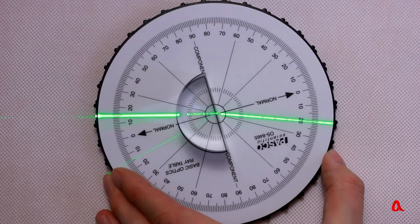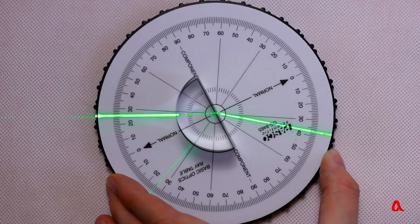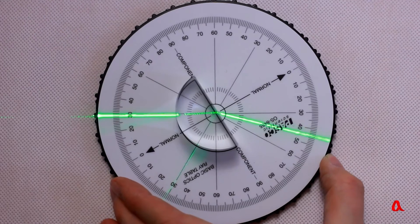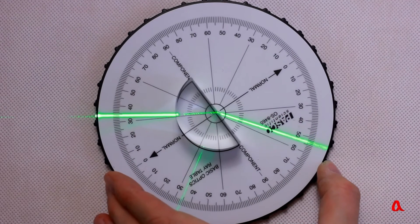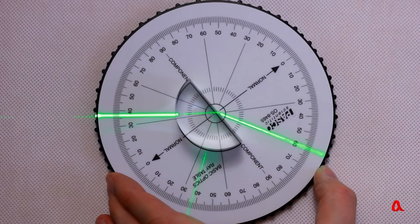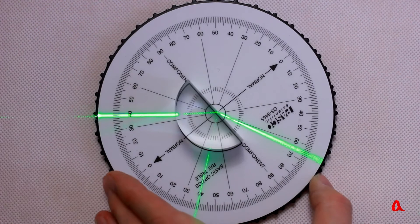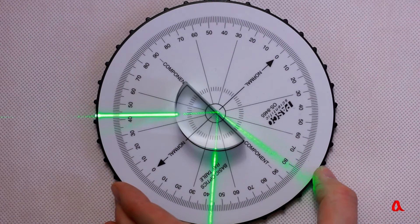When we make the angle of incidence wider, the angle of refraction grows wider even more rapidly. The refracted beam is almost gliding along the surface and we see a reflected beam appear within the collar.